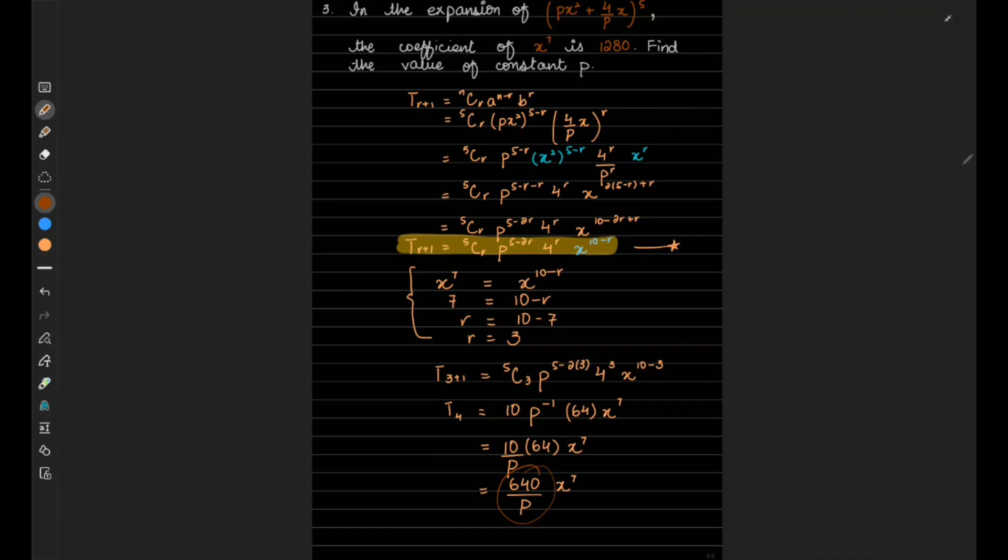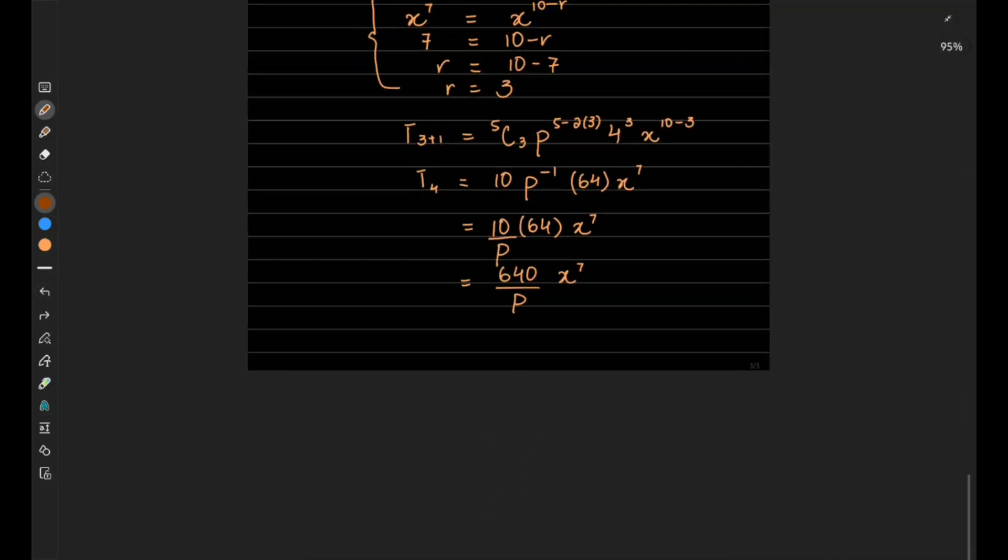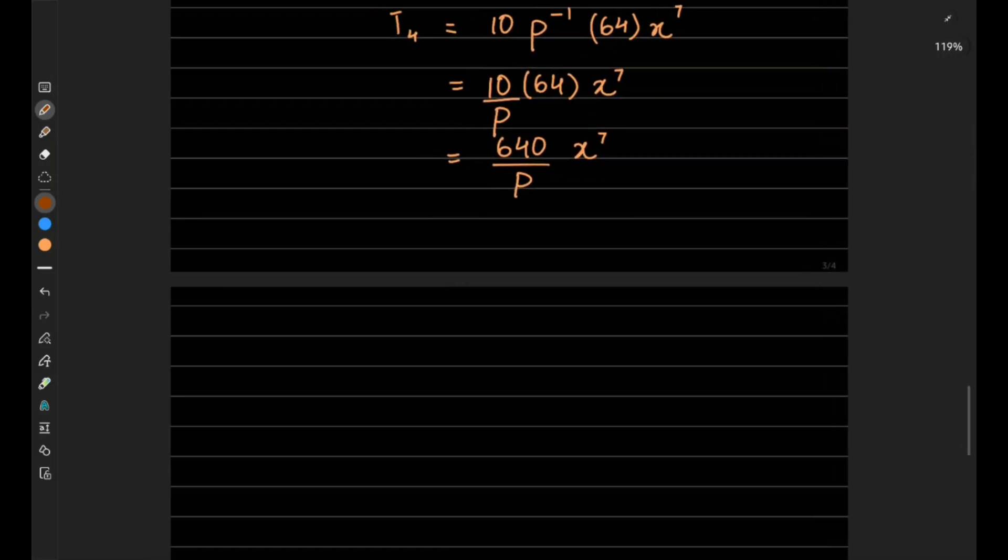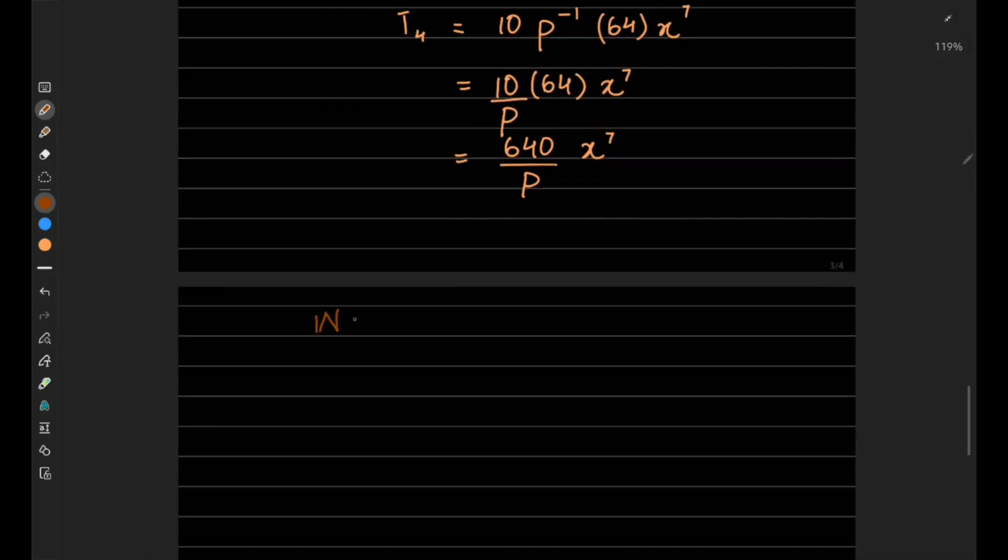So we know 640/p must be equals to 1280.